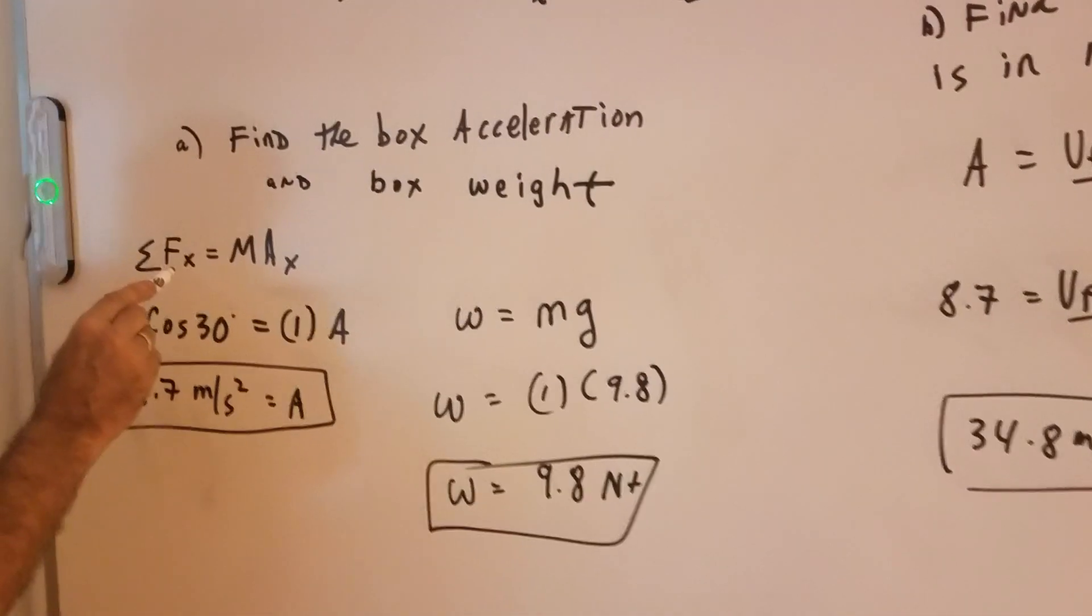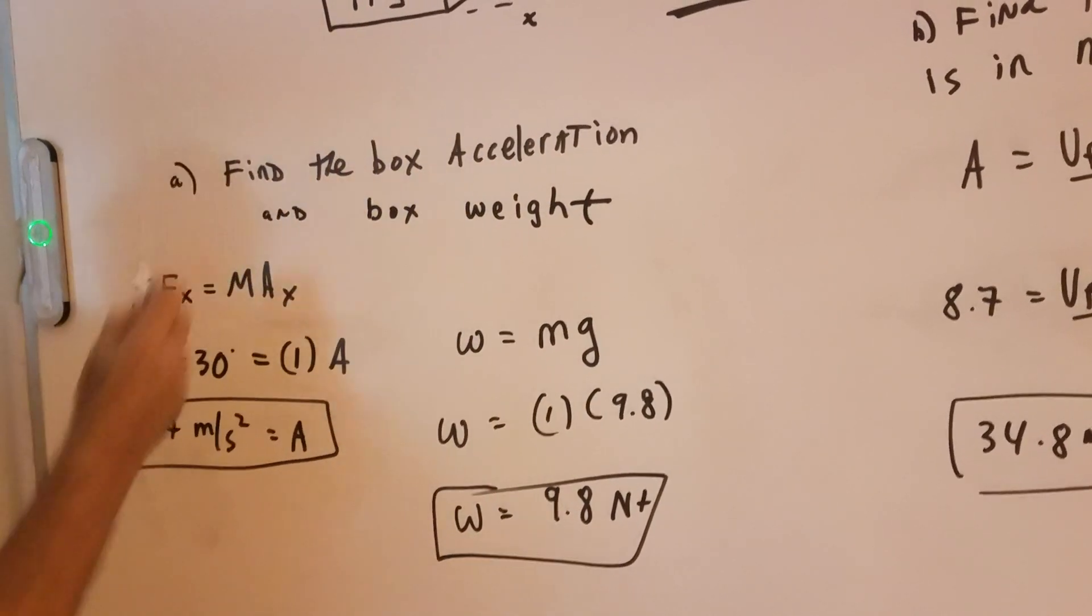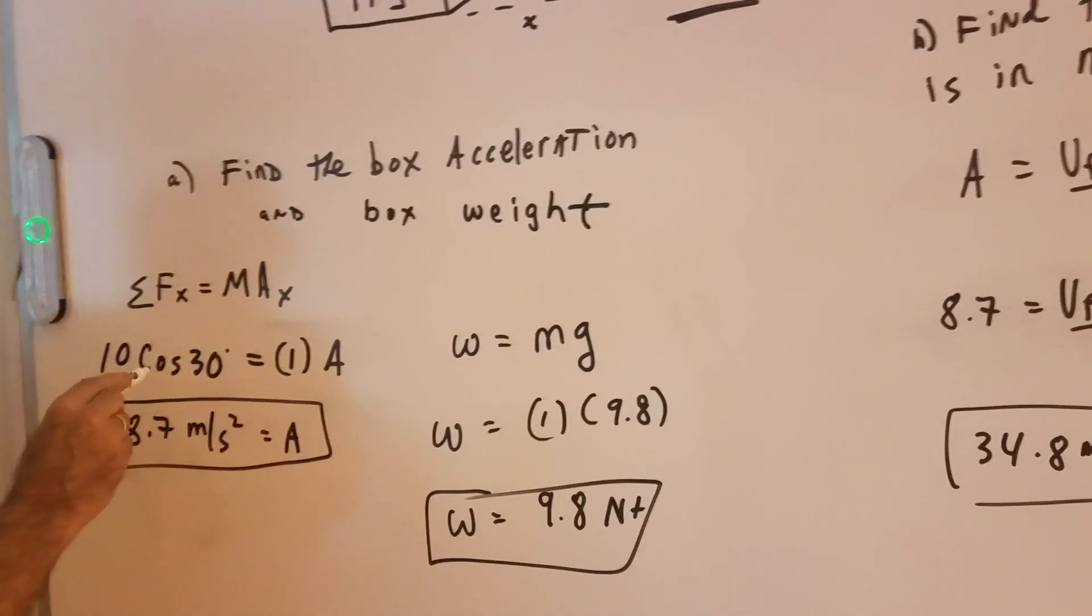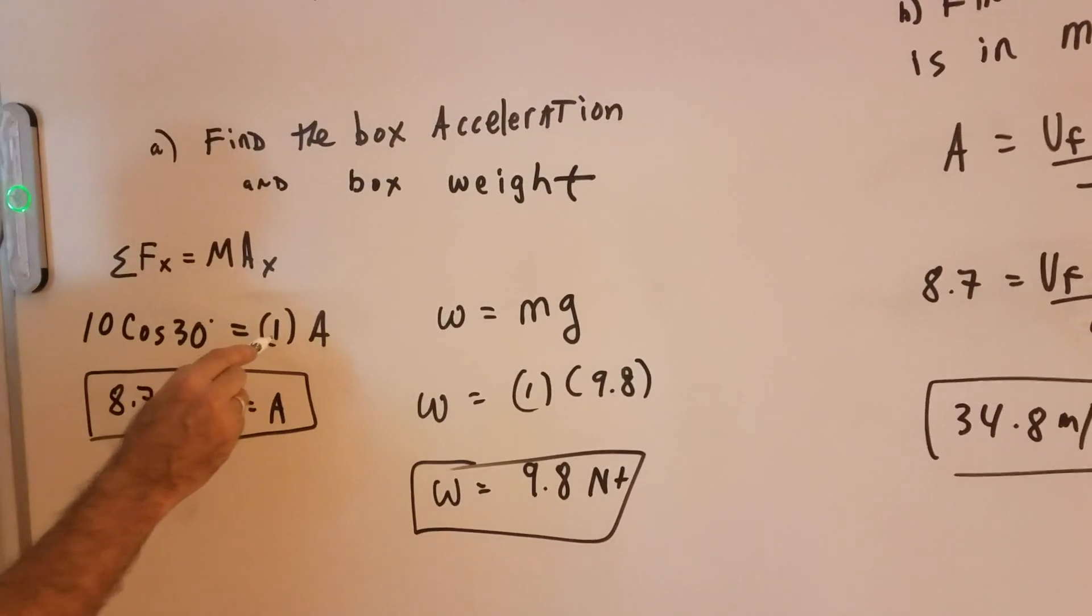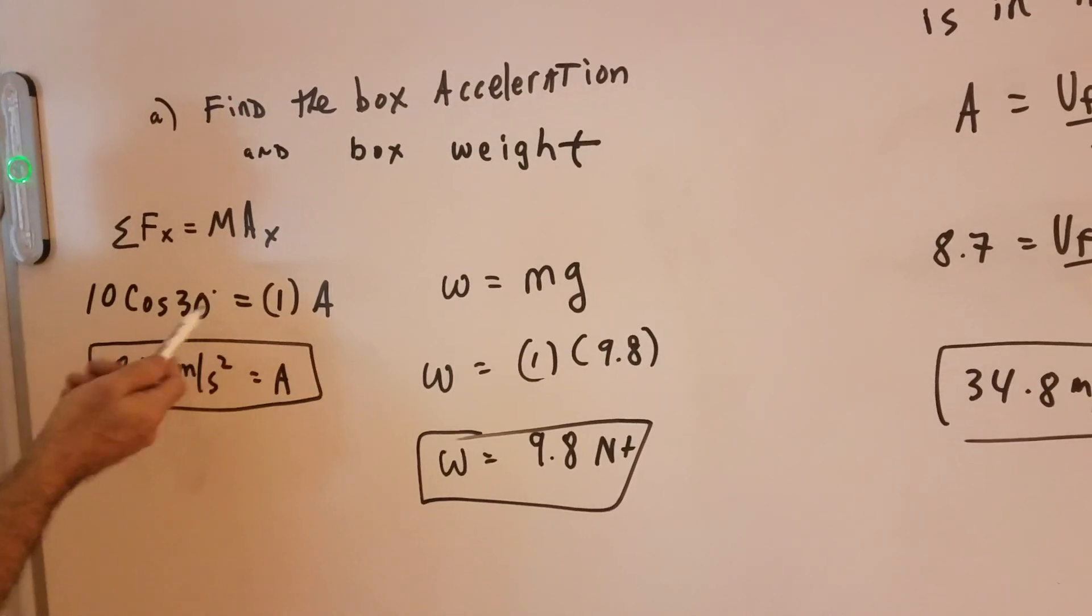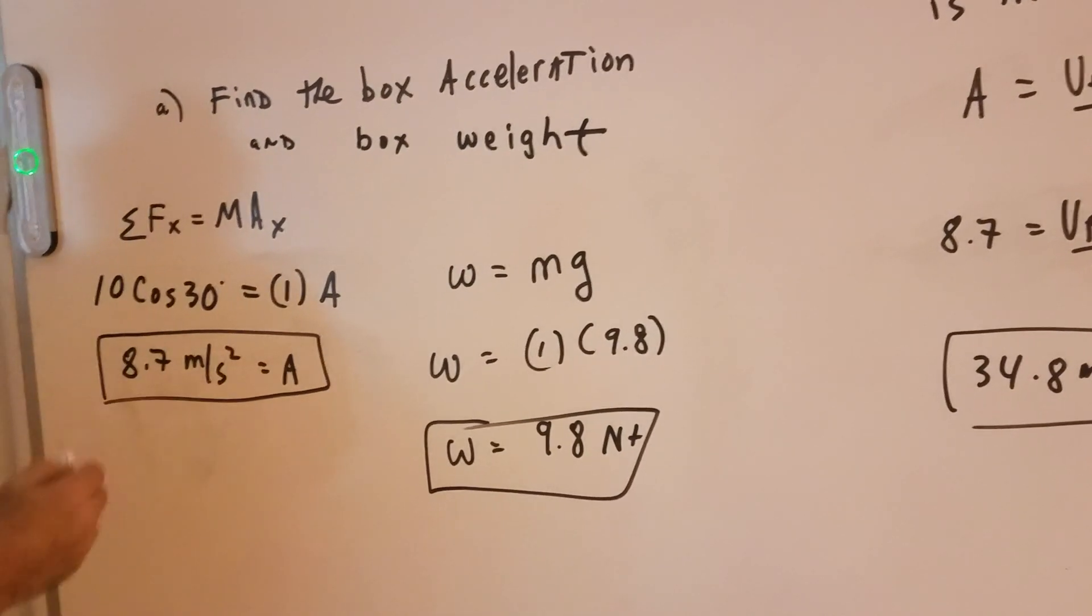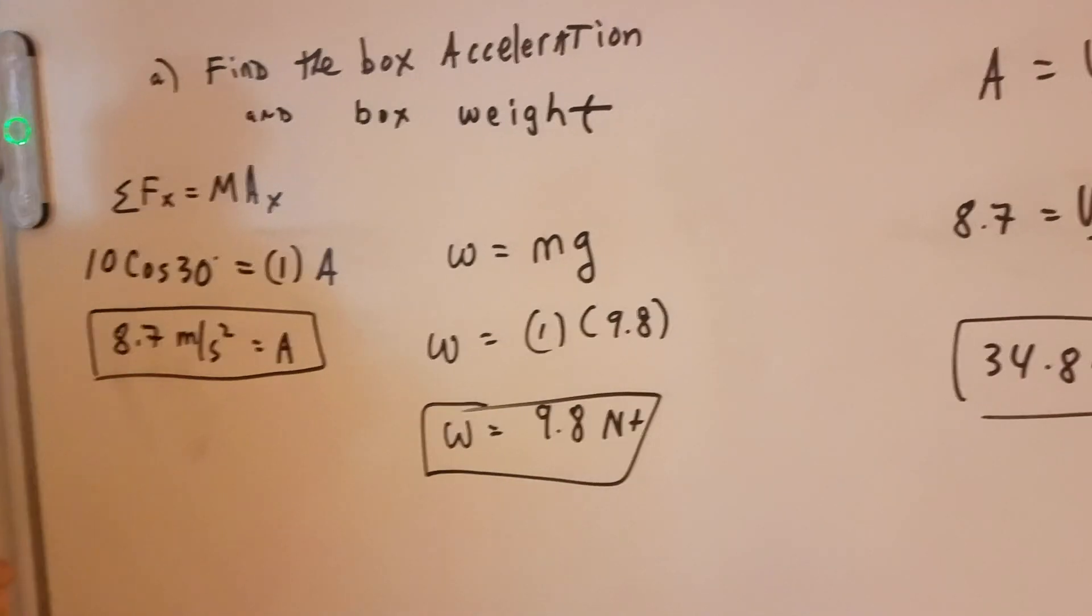So the force, the only force here, since there's a smooth surface, there's no friction opposing the motion, we have 10 cosine 30. That's the only force. The mass is one kilogram. And we plugged in. Cosine of 30 is 0.87. Roughly times 10 is 8.7. Notice the units of acceleration is meters per second squared.